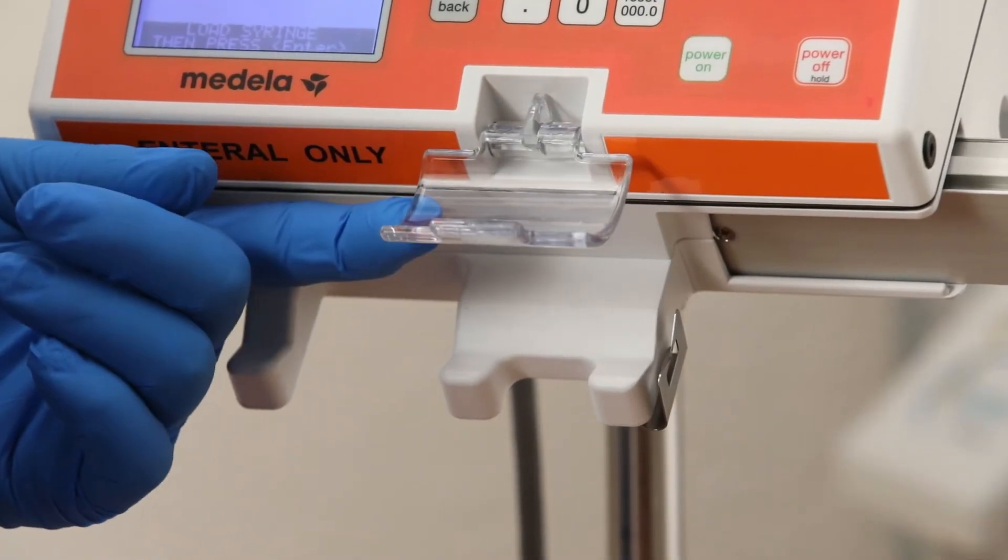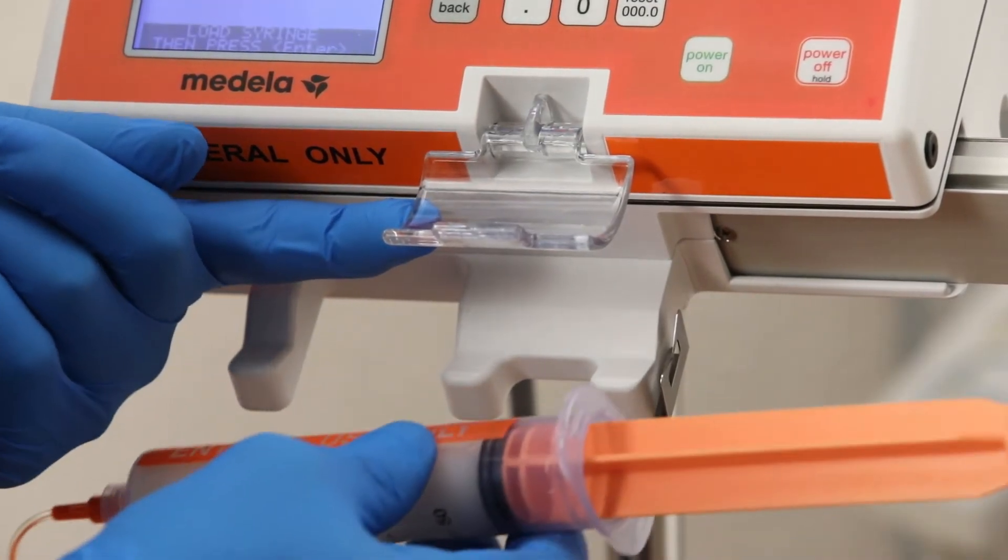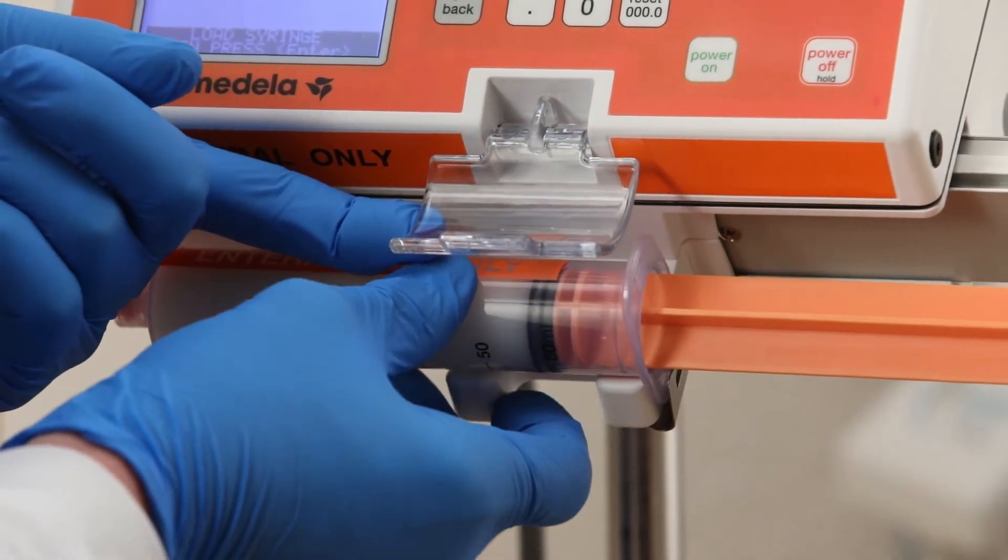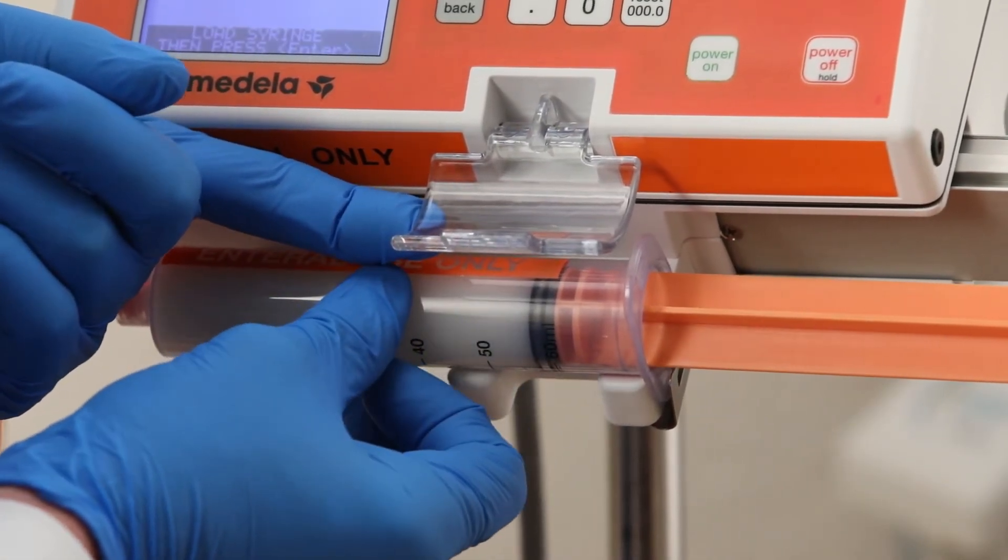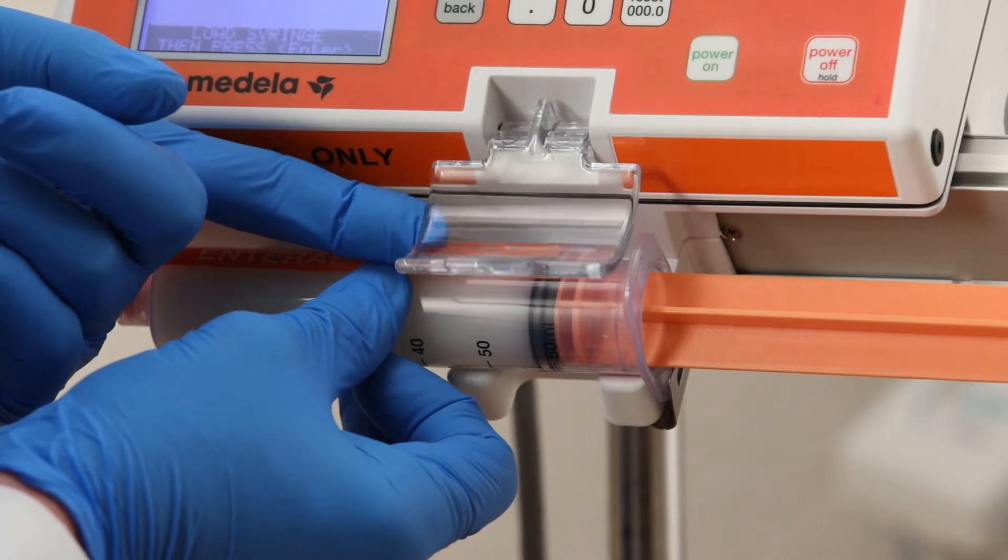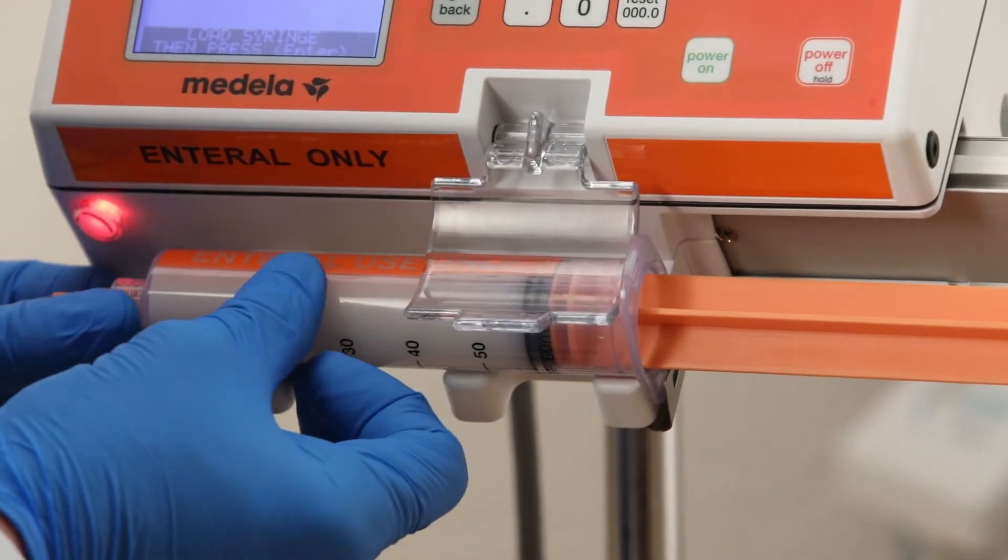Lift the clear syringe clamp allowing room to place the syringe. Insert the syringe barrel first. Ensure the barrel is placed in the two notches under the clear syringe holder clamp. Then lower the clear syringe clamp.